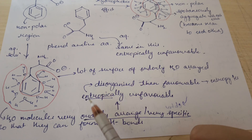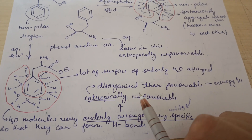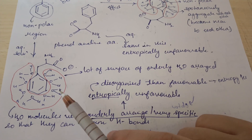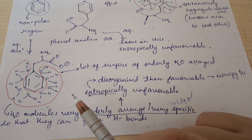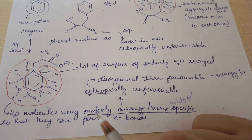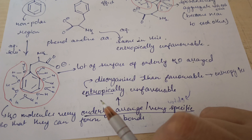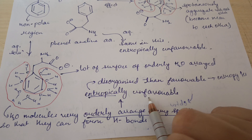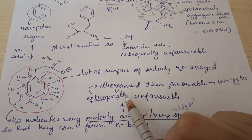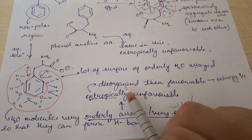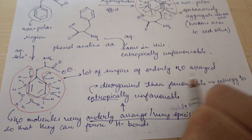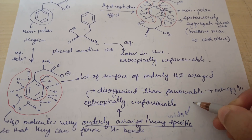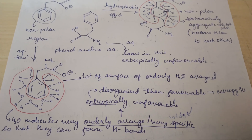This orderly arrangement is entropically unfavorable. There was a lot of randomness in the water molecules before, but now that randomness is lost and they are orderly arranging themselves. When the system is disorganized, entropy is higher and that is favorable. But here, the entropy of the system is actually decreasing because the water molecules have become highly ordered.